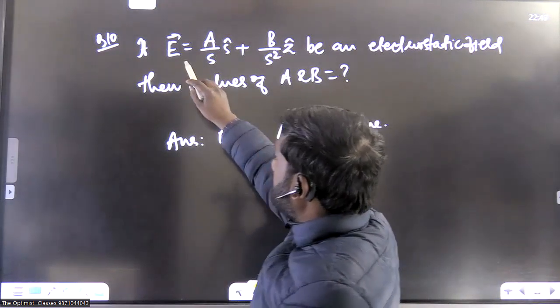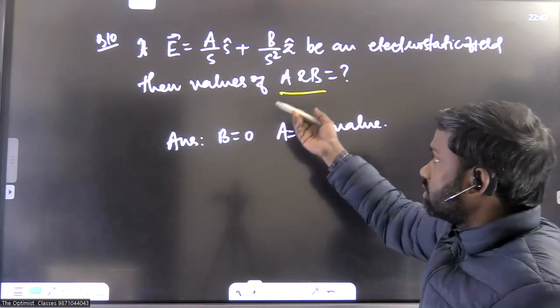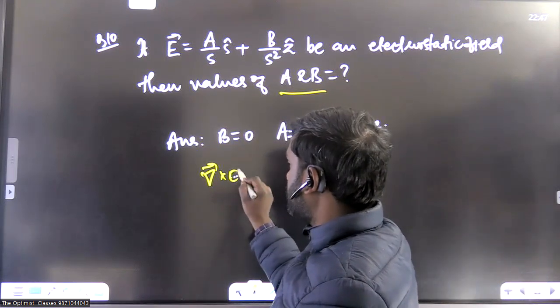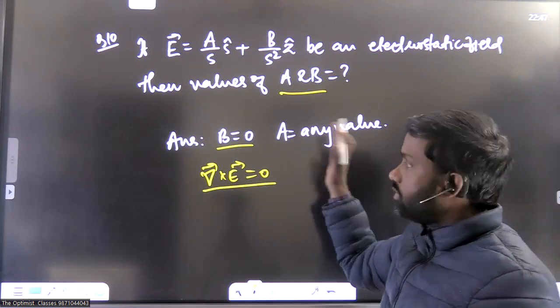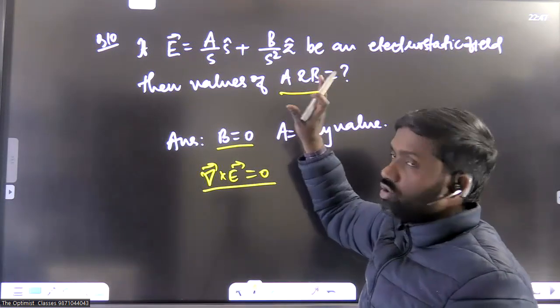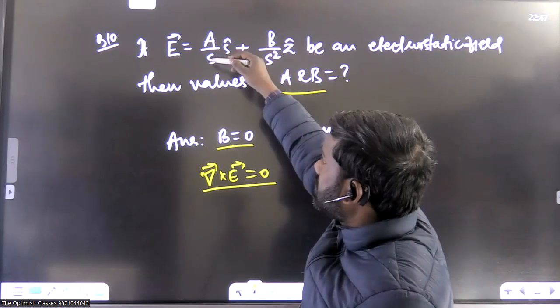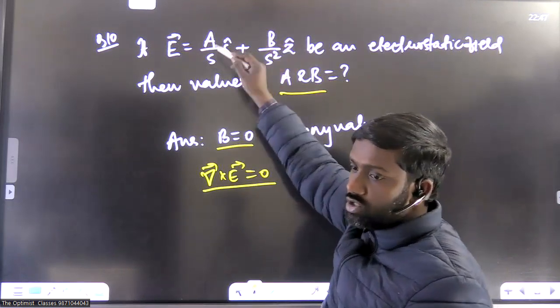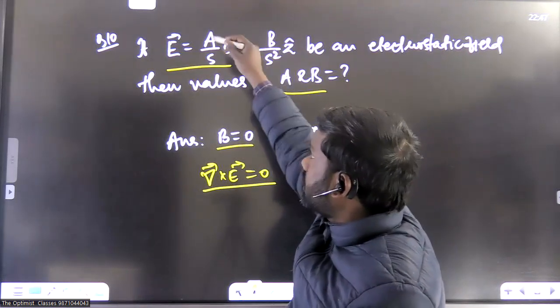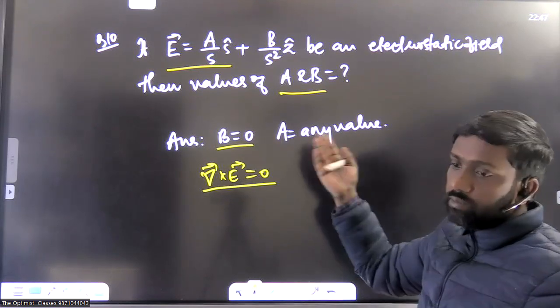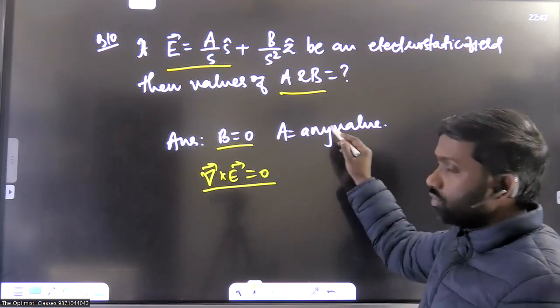Now, this is a question. It says that if E is electrostatic field, it can be one, two, three, four, five. It can take any value. Because if you take curl, you will not get any value of A. So it means this vector will remain conservative, because curl is becoming 0. So you can put any constant here. So A can take any values. So simplest case we can take A equal to 1 if the option was written as 1. So if the option is written as 1, we can take it. But if 2, 3, 4, 5, then it will be correct.